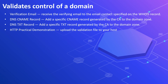Before a certificate authority can issue an SSL certificate, the applicant needs to confirm their domain ownership rights. The domain should be validated by following methods defined by the certificate authority. Commonly used validation methods include: verification through email, where the registrar sends an email to the address on the WHOIS record; DNS CNAME record, where you add a specific CNAME record generated by the CA to the domain zone; DNS TXT record validation, where you add a specific TXT record; and HTTP practical demonstration, where you upload a specific validation file to your host — though this last method is limited in use.